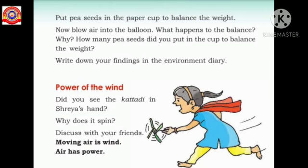The part where the balloon is hung went down. So in order to balance the weight, we have to add some pea seeds to the cup. From this experiment, we can understand that air has weight.